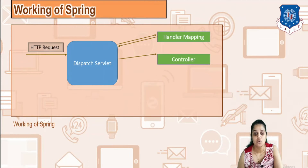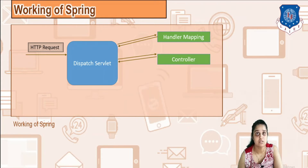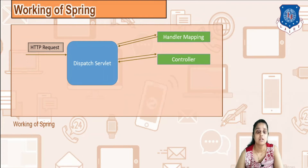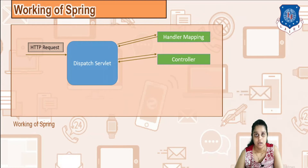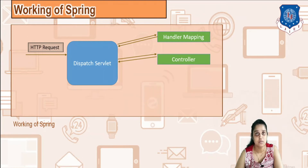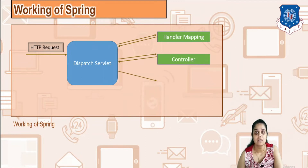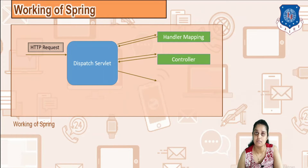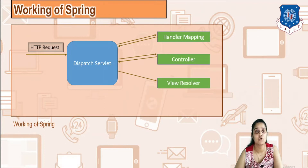The controller performs all the various functionalities and business logic it is supposed to do. It will handle your GET or POST method and take care of all business logic. The controller then gives the request back to the dispatcher servlet, and the dispatcher servlet moves on to something called a view resolver.